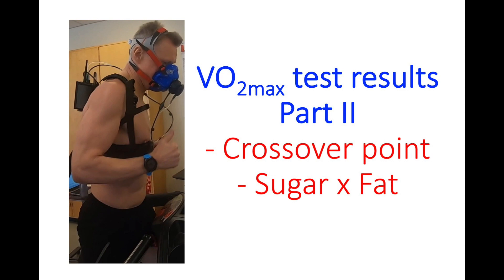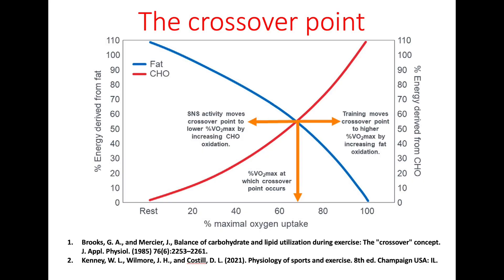Hello everyone. This is part two, and I want to focus on the concept of the crossover point. In part one, I mentioned that the crossover point referred to the exercise intensity at which glucose and fat contributed equally to energy production — in other words, 50-50%.